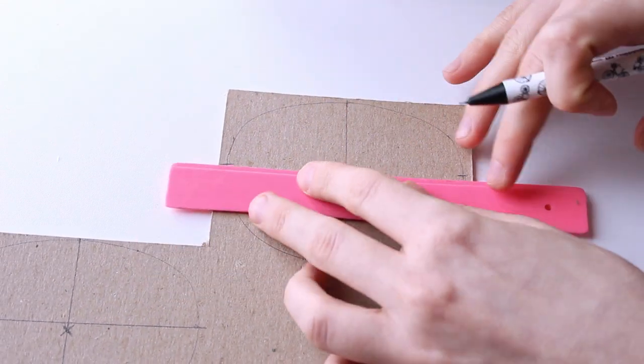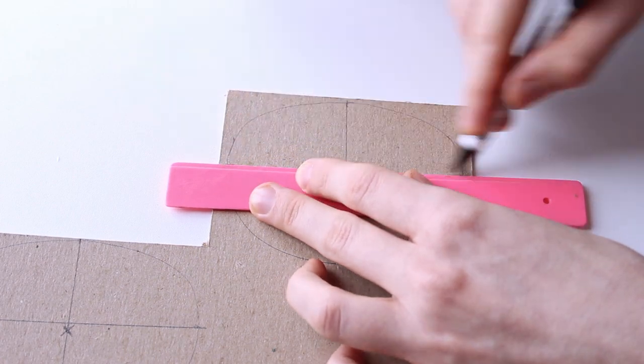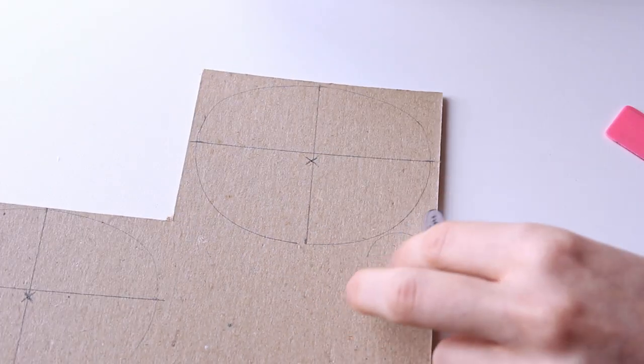Connect the opposite notches using a ruler. Trace the neck top piece and cut both pieces out.